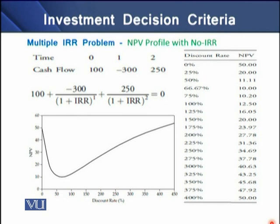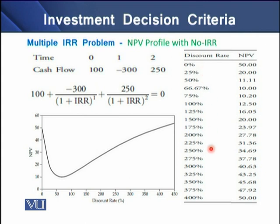We may also encounter a situation where no IRR exists for a project. On screen we see a project with a cash outflow of $100, then a cash inflow of $250 at time 2, but a negative cash flow of $300 at period 1. Looking at the NPV profile from 0% to 400%, there is nowhere a zero NPV within this discount range.